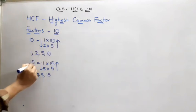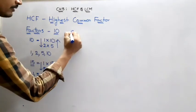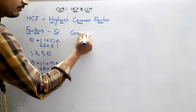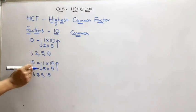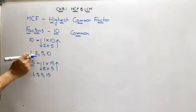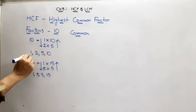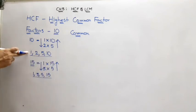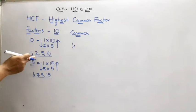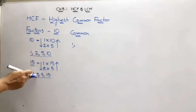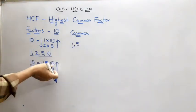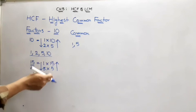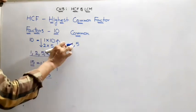These are the factors of 10 and 15. Now, what are the common factors of 10 and 15? Of these, 1 is a common factor for both 10 and 15. But 2 is not a common factor because it is available in 10's factors but not in 15's. And 5 is a common factor. However, 10 and 15 themselves are not factors of both numbers.